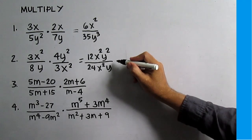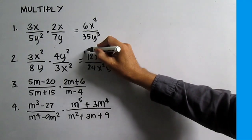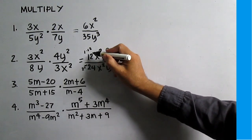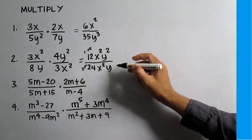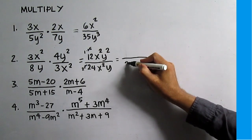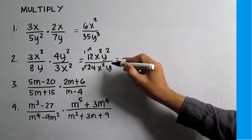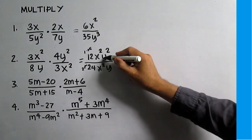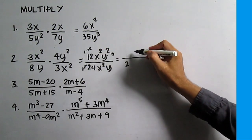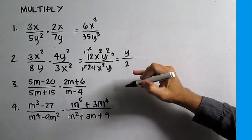Now divide out the common factor. For 12 and 24: this is 1 times 12 and 2 times 12, so 12 is common — divide out 12, leaving 2 in the denominator. x squared divided by x squared is 1, and y squared divided by y is y. So 1 times y is y. The answer is y over 2.